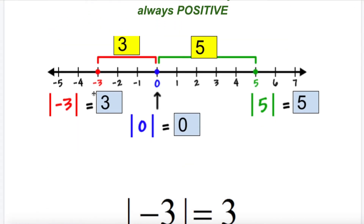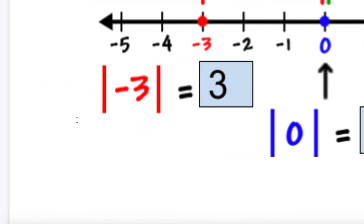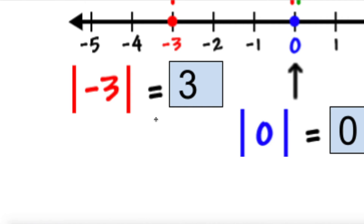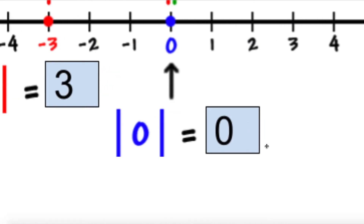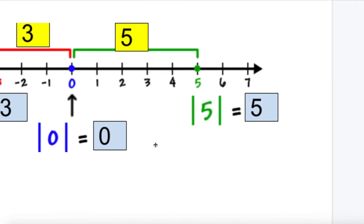The number negative 3 is three units to the left of zero. Its location is negative 3, but it is three units away, so the absolute value of negative 3 is 3. The symbol for absolute value is two vertical lines on either side of the number. The absolute value of negative 3 is 3, the absolute value of 0 is 0 — because zero is zero units away from zero — and the absolute value of 5 is 5. All answers are positive.